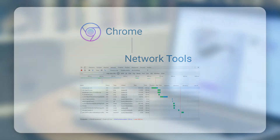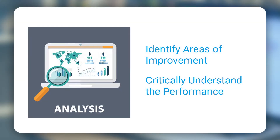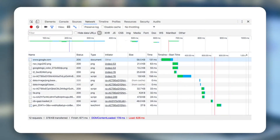The first step in optimizing a website for better performance is to identify the areas in which you can improve it. This needs a critical understanding of the website's performance and analysis of the same. To start off, we need to know the number of requests made on a single page, the amount of data that the page has, and finally the time it takes to load the page.